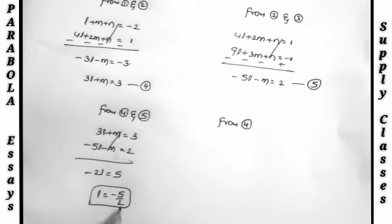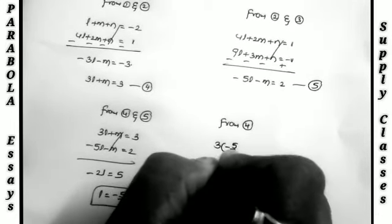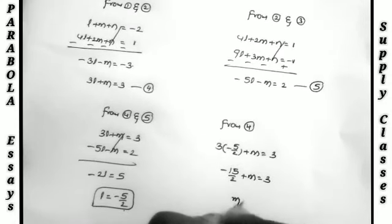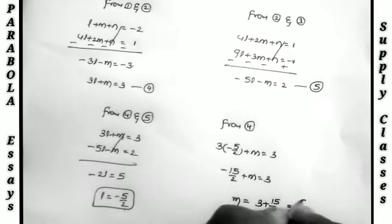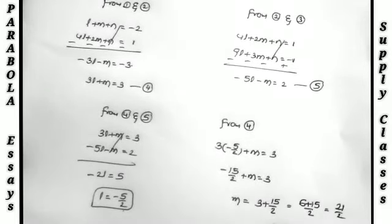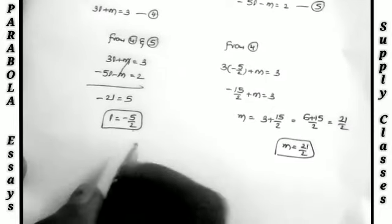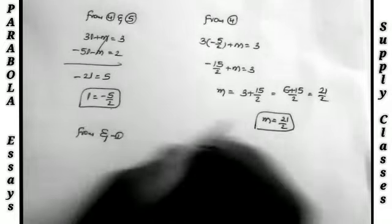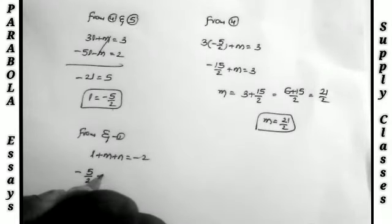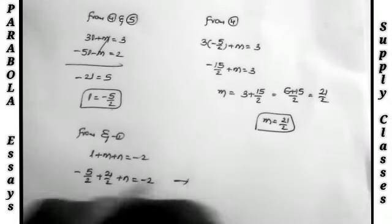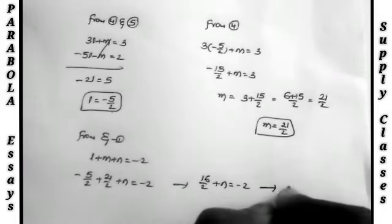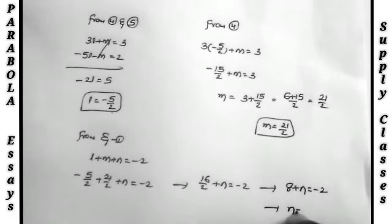Solving equations 4 and 5: equation 4 is 3l + m = 3, equation 5 is −5l − m = 2. Adding directly cancels m, giving −2l = 5, so l = −5/2. Substituting l = −5/2 into equation 4: 3(−5/2) + m = 3, so −15/2 + m = 3, giving m = 3 + 15/2 = 6/2 + 15/2 = 21/2. Substituting l and m into equation 1: −5/2 + 21/2 + n = −2, so 16/2 + n = −2, giving 8 + n = −2, so n = −10.